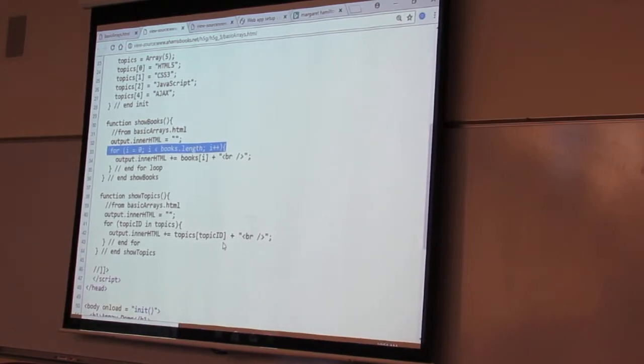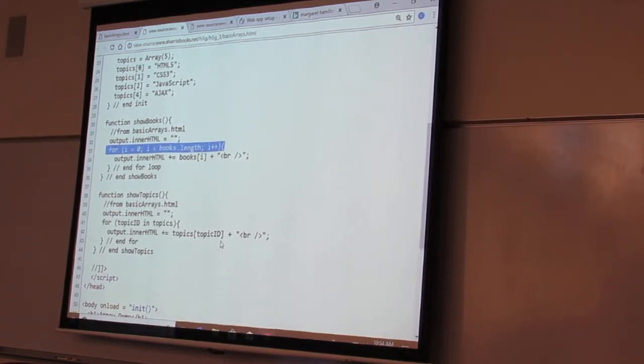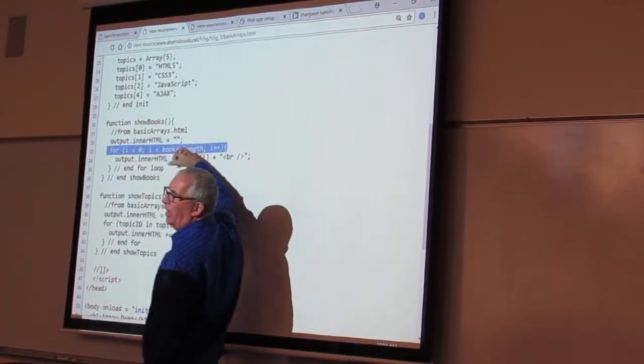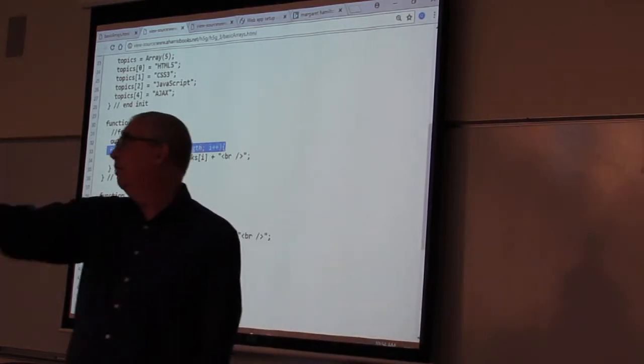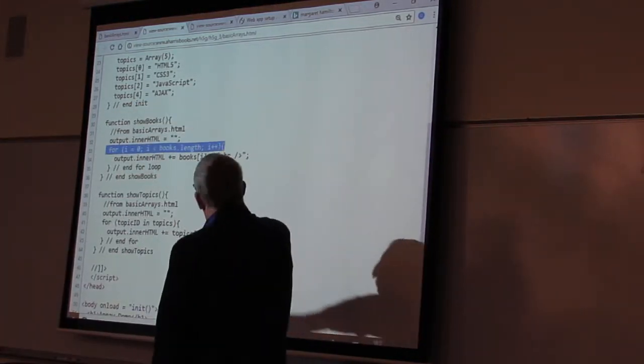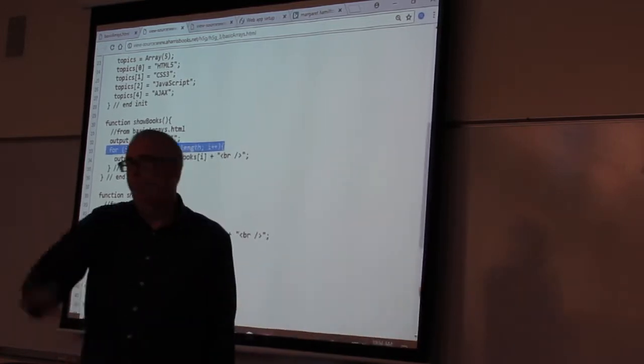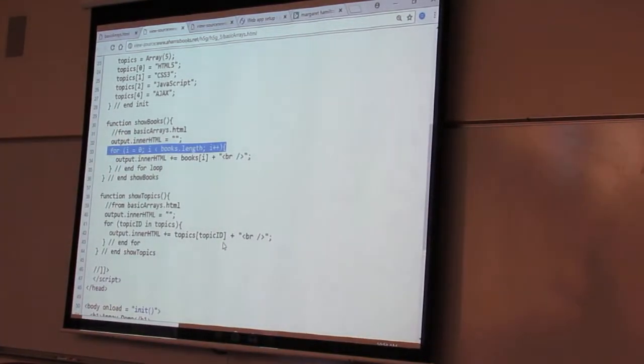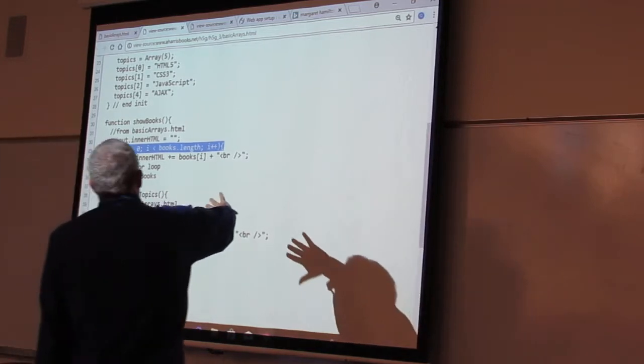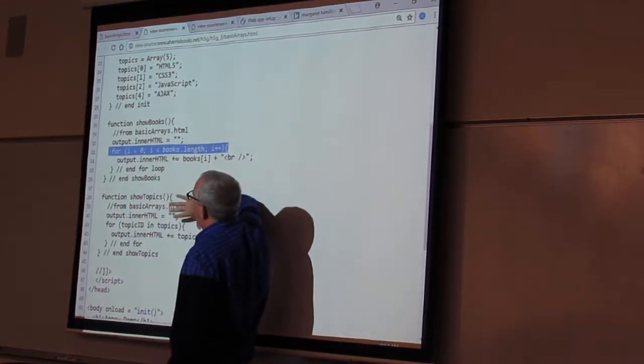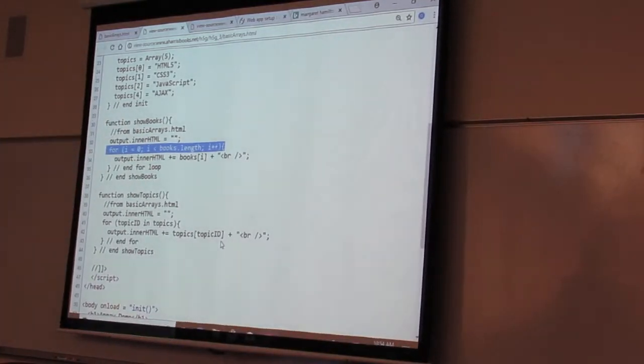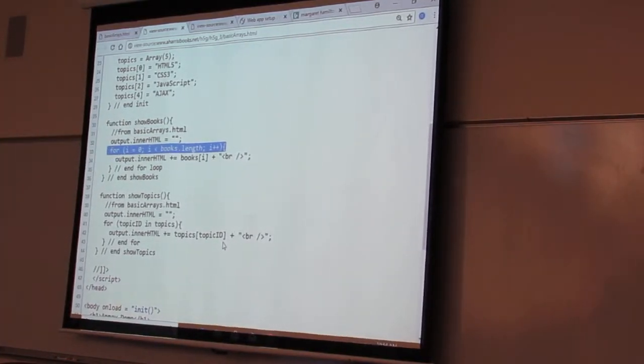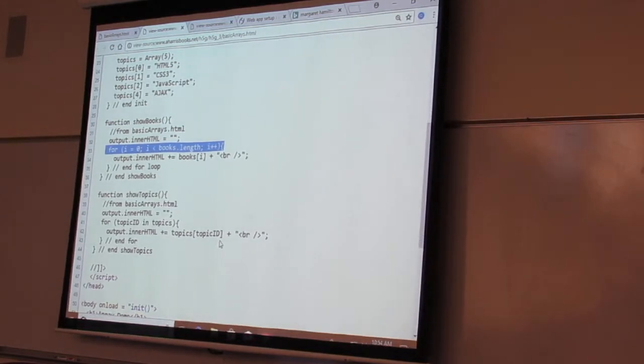Here's another way of doing that. You can shorten it a little bit: for topic ID in topics. What that does is the topic ID goes through all of the values, all of the indices, and gives me all of the indices. What's interesting about this example - I wish I could tell you the truth that I did it on purpose - is that since three is not a topic ID, it never tried to show me element number three. It just skipped it.